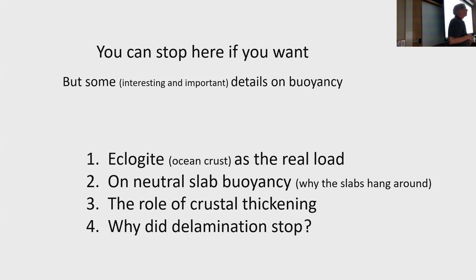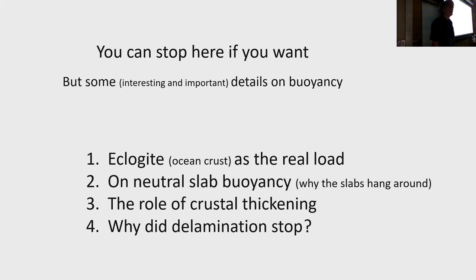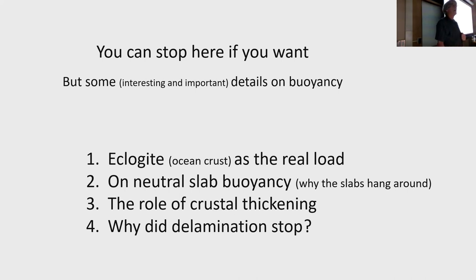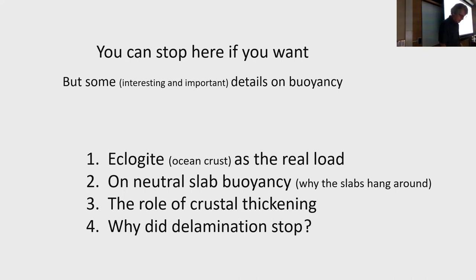I want to go on and talk about the real load — not just the slab itself but the oceanic crust of the slab where it's turned to eclogite. Eclogite is an interesting rock in many ways, and I want to talk about why those slabs seem to be hanging out in the mantle as though they're neutrally buoyant, and also why the delamination stopped where it did.